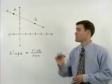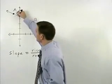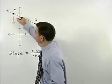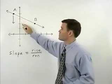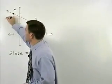Notice, however, that to get from point A to point B, we must first go down two units, one, two. So our rise is actually negative two.